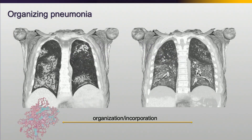Typical diffuse organizing pneumonia is widespread consolidation, usually more in the lower lung zones, but look at the absolute periphery. Over time, it will clear. And over time, this organized material will get incorporated into the alveolar walls and forms a type of fibrosis.